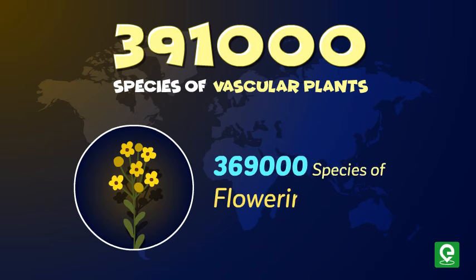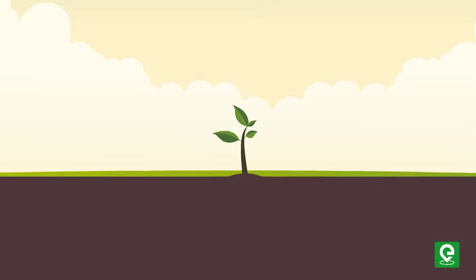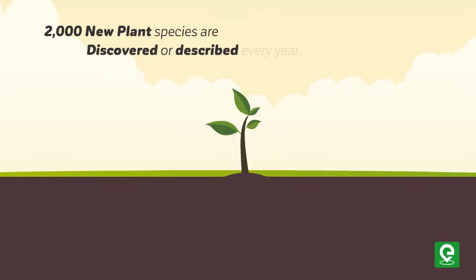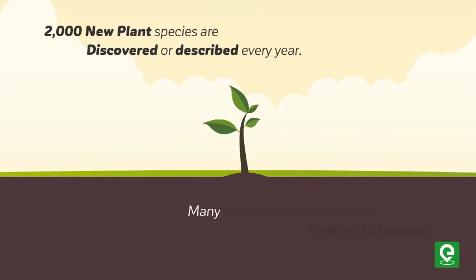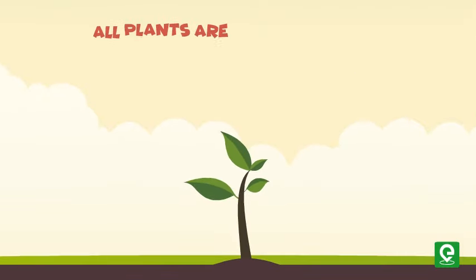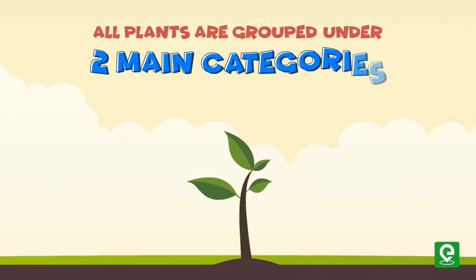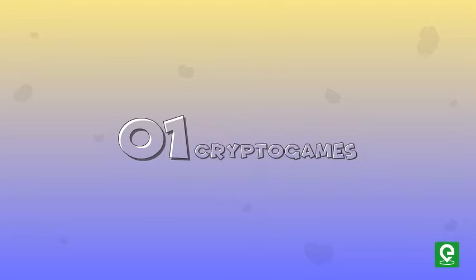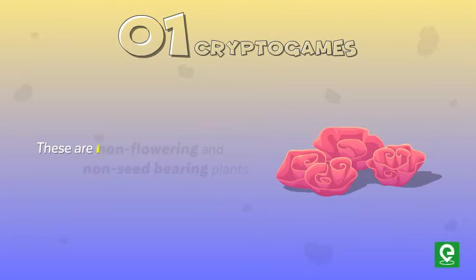Out of these, about 3,69,000 species are flowering plants. About 2,000 new plant species are discovered or described every year, many of which are already on the verge of extinction.